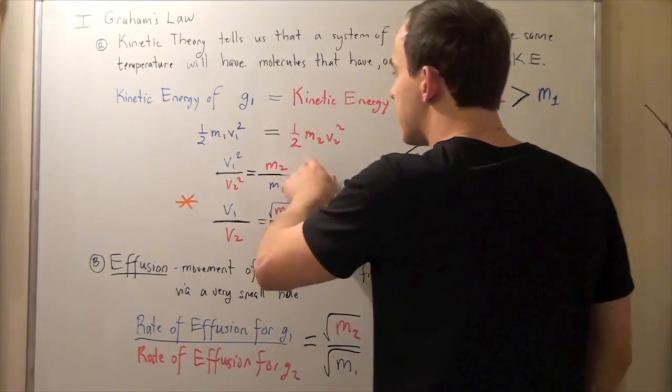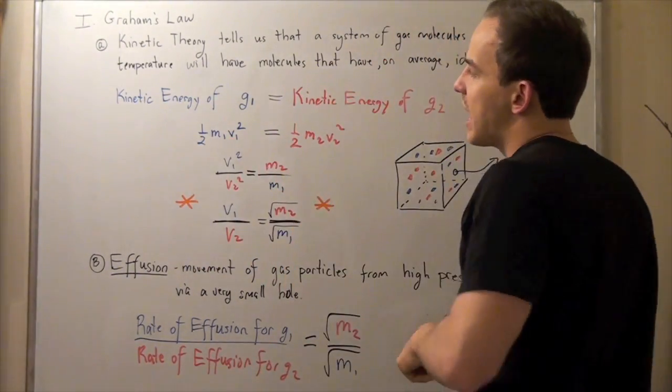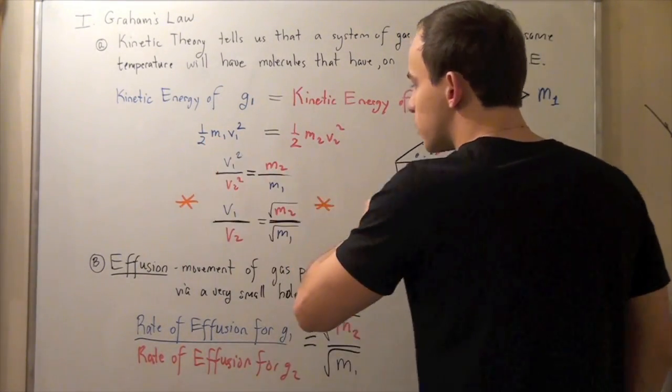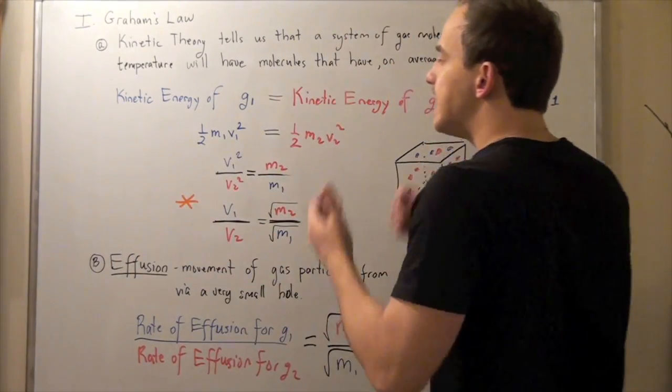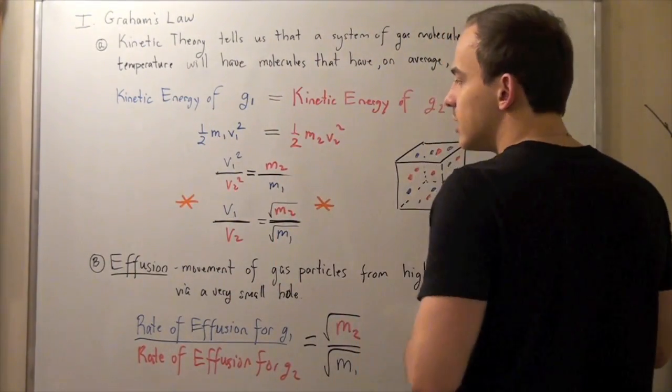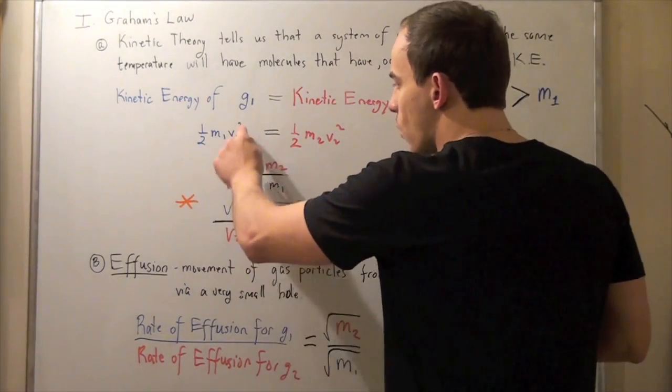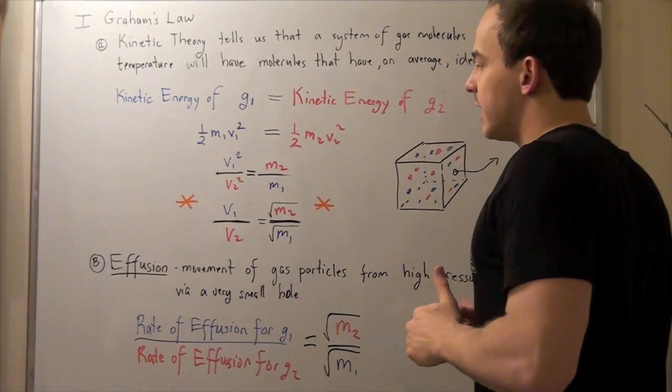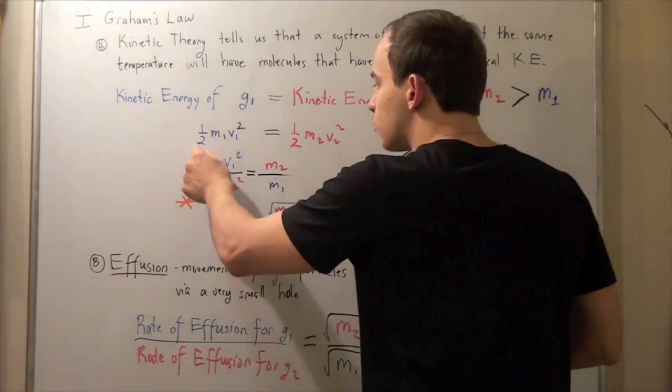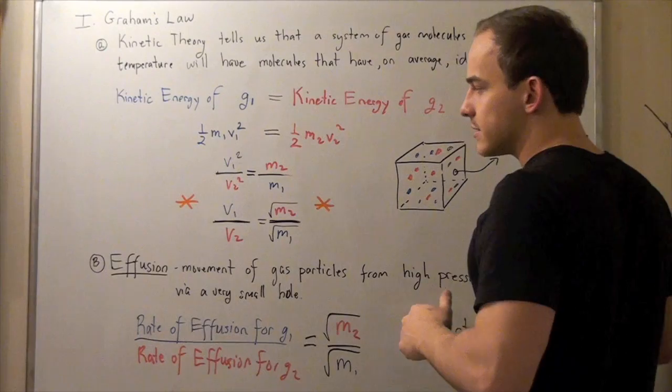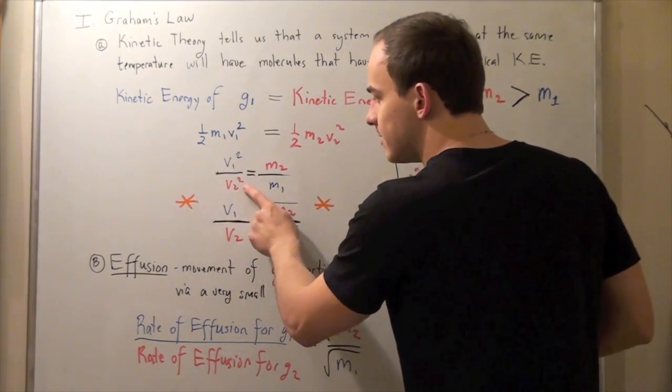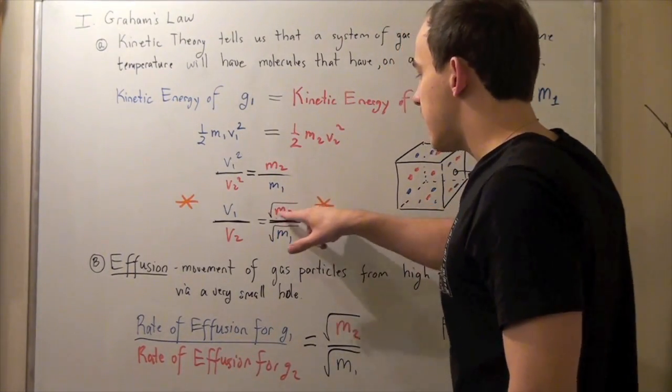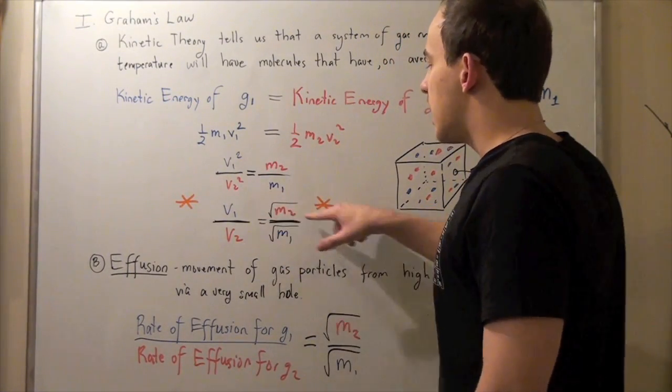Let's cancel out the 2's by multiplying each side by 2, and then let's bring our v2 over and our m1 over this way. So we want velocities on the left side and masses on the right side. We get v1 squared divided by v2 squared equals m2 over m1. And finally, let's take the square root of both sides. These 2's cancel, we're left with v1 over v2 equals the square root of m2 divided by square root of m1.